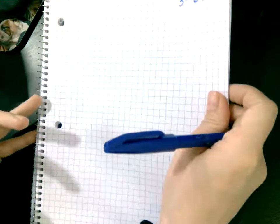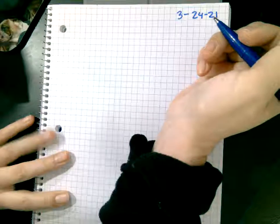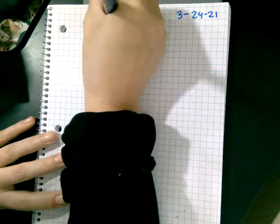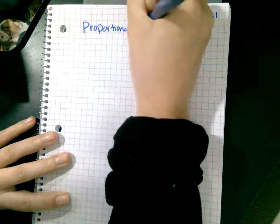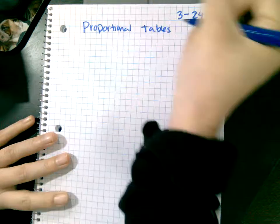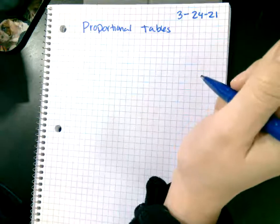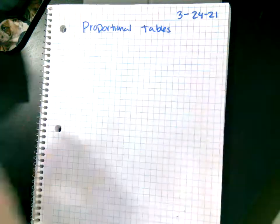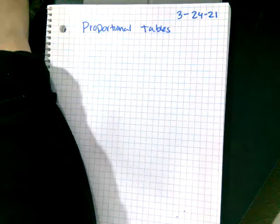Alright, 3-24-21. We're going to do proportional tables. I'm telling you they're proportional. Next week you have to determine if they're proportional, but this week I'm telling you they're proportional.